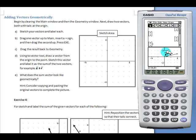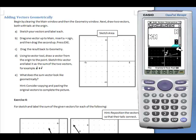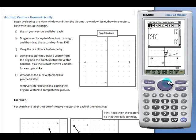select the second vector, drag it up, press exe, and then drag the result back to the geometry window. They may need to scroll to see the point that was plotted.